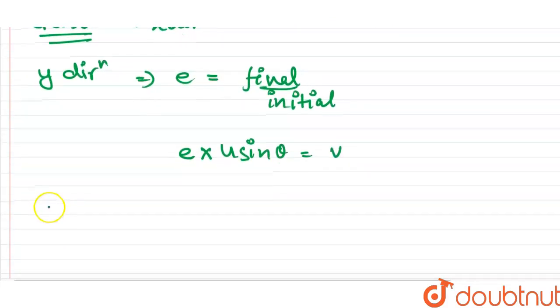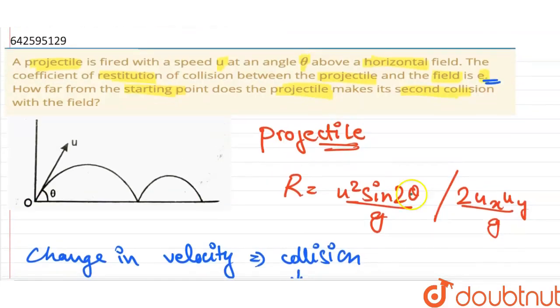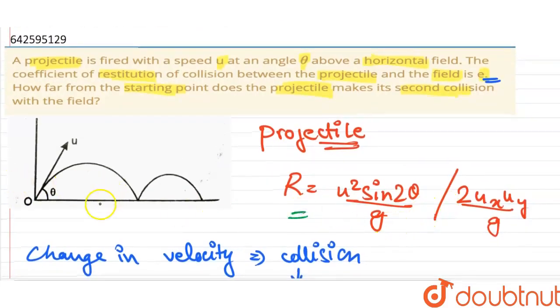Okay, so now for range, we know this is the range of the first collision. Let's say this is r1. So this is r1 because velocity is u, angle from the ground is theta and everything else is same. So therefore, this is r1 and let's say this is r2.